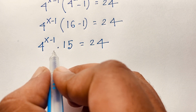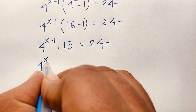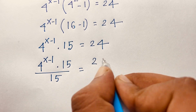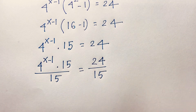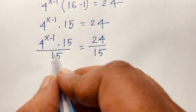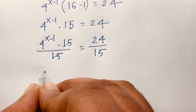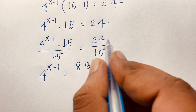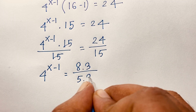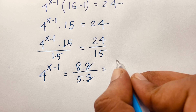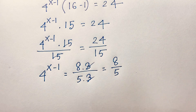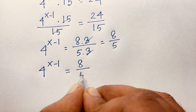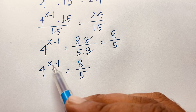So we have 4 to the power x minus 1 times 15, equals 24. Now I divide both sides by 15. The 15s cancel, giving 4 to the power x minus 1 equals 24 over 15. Since 24 equals 8 times 3 and 15 equals 5 times 3, the 3s cancel, and we get 4 to the power x minus 1 equals 8 over 5.